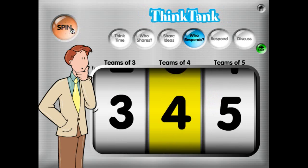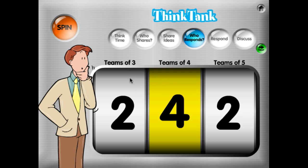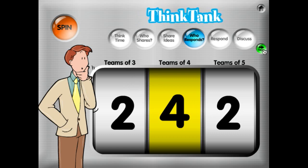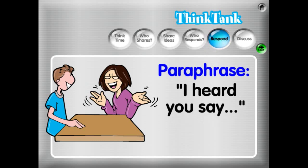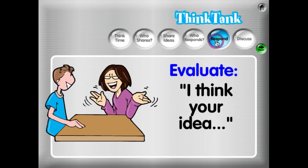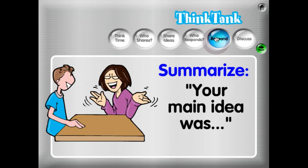Once that student shares, somebody is going to respond to that student. Student number three is not selected for any of these response options because that's the student who already shared. Another student is going to respond, and that's what happens at the respond step. The response prompts — like 'that made me think of,' 'connect,' paraphrasing, evaluating, summarizing — are randomly selected from good thinking-type responses. Each time you click, you get a different randomly selected thinking-type response.